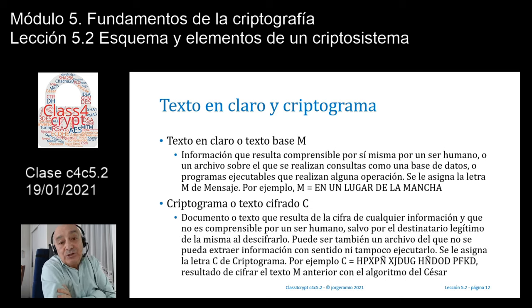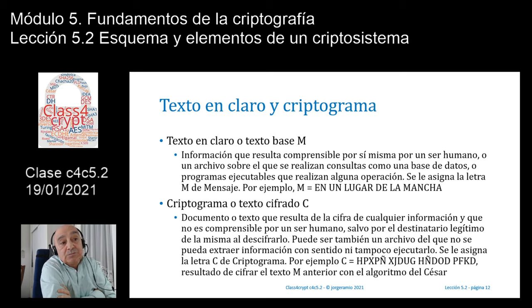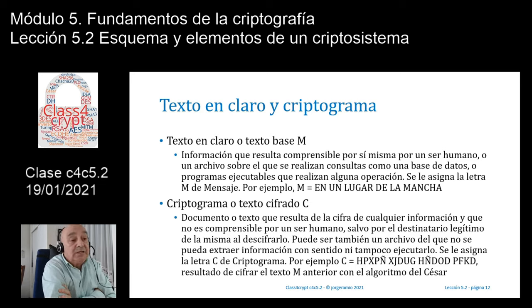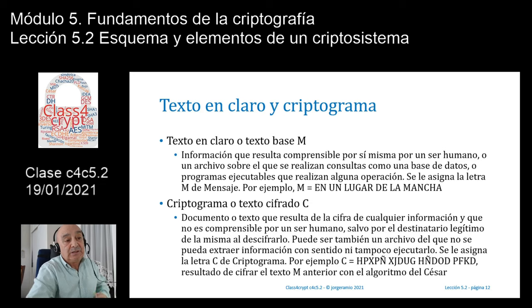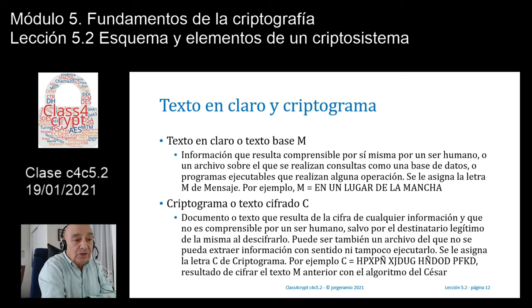El criptograma o texto cifrado C es el documento o texto resultado de cifrar cualquier información, que no es comprensible por un ser humano. Si es un texto, se puede leer pero no entender; si es una base de datos, no se puede abrir ni consultar; si es un ejecutable, no se ejecuta. Se le asigna la letra C de criptograma. Un ejemplo sería cifrar con el algoritmo César 'En un lugar de la Mancha' con un desplazamiento de tres letras, produciendo algo como 'HQ XQ OXJDU GH OD PDQFKD'. En criptografía moderna el criptograma se suele expresar en formato base64.